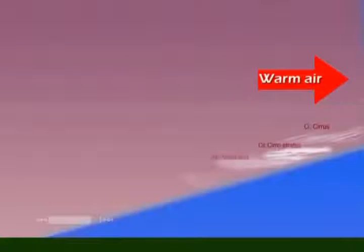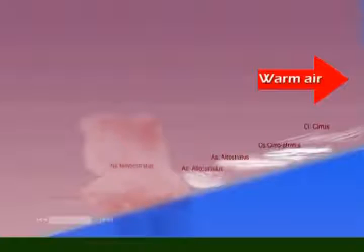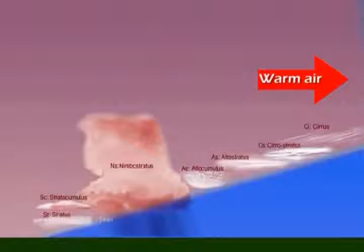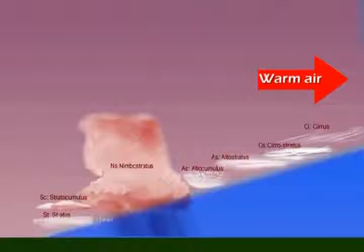Then, as the warm front advances, rain clouds will begin to form at lower altitudes. Then the cold front moves in quickly, behind the slower-moving warm front.